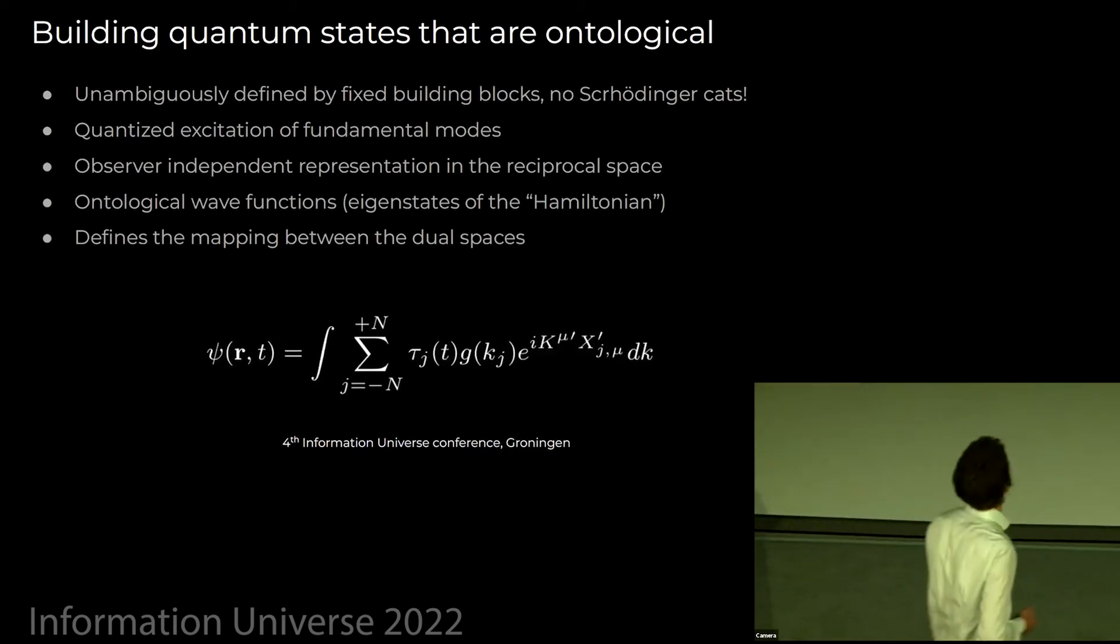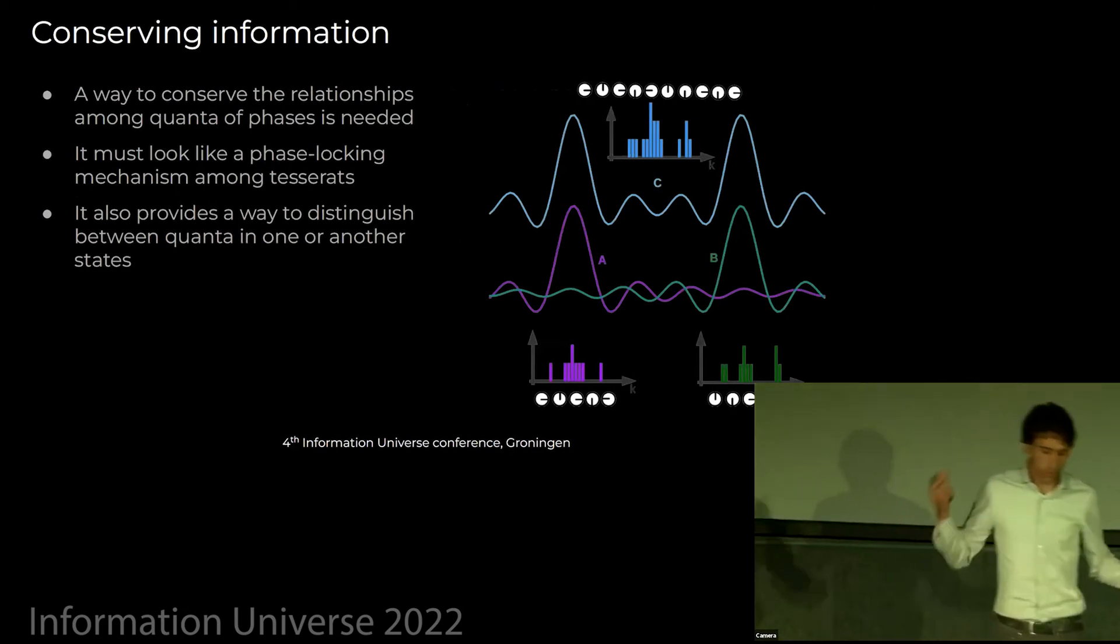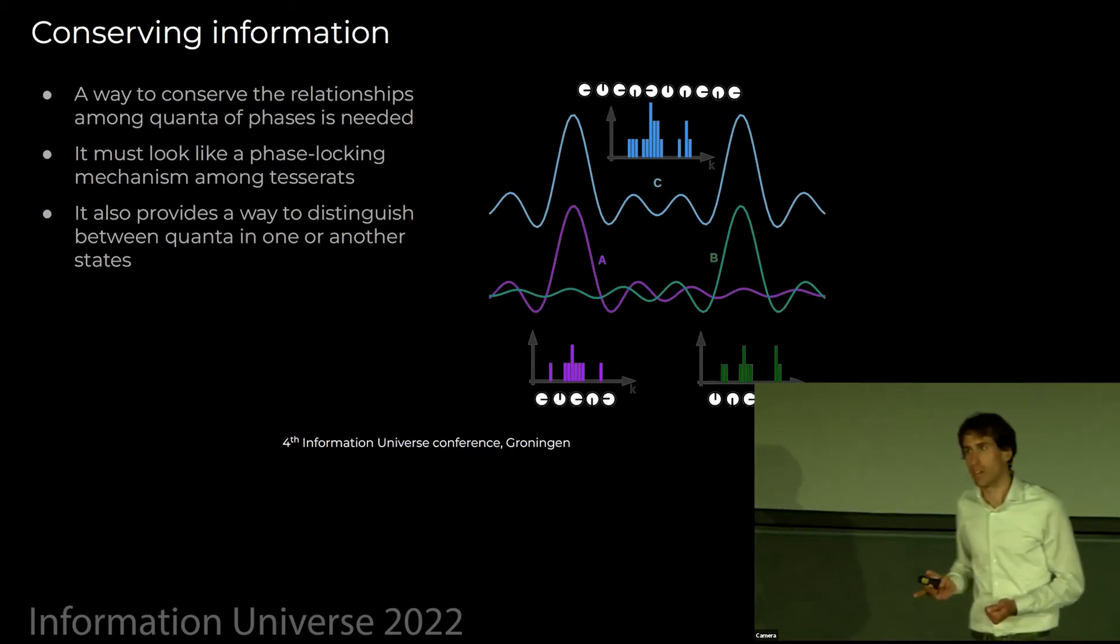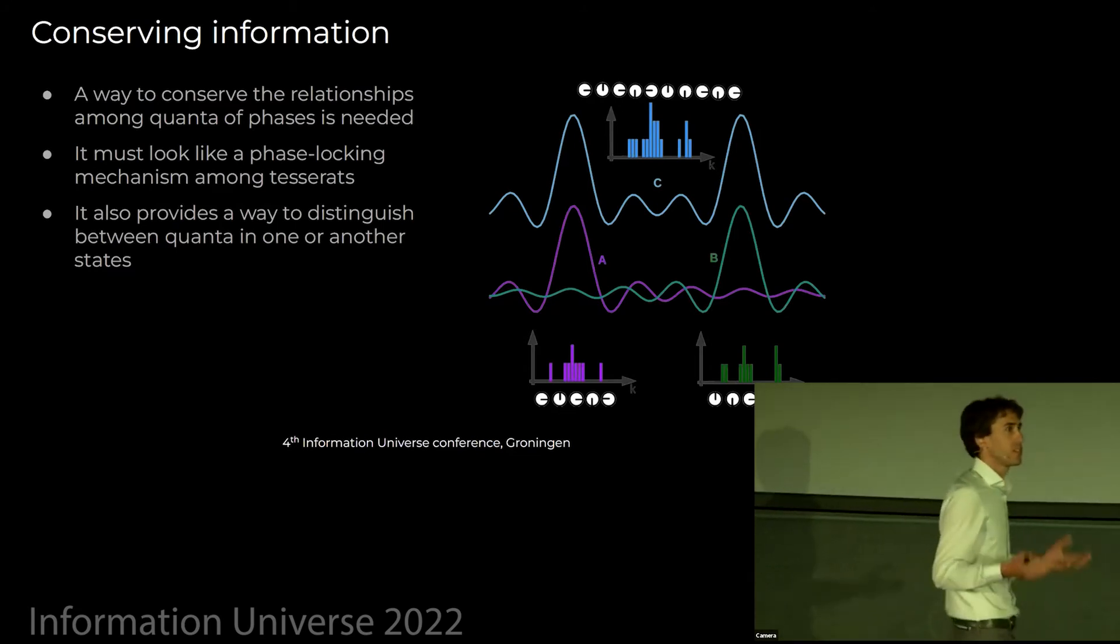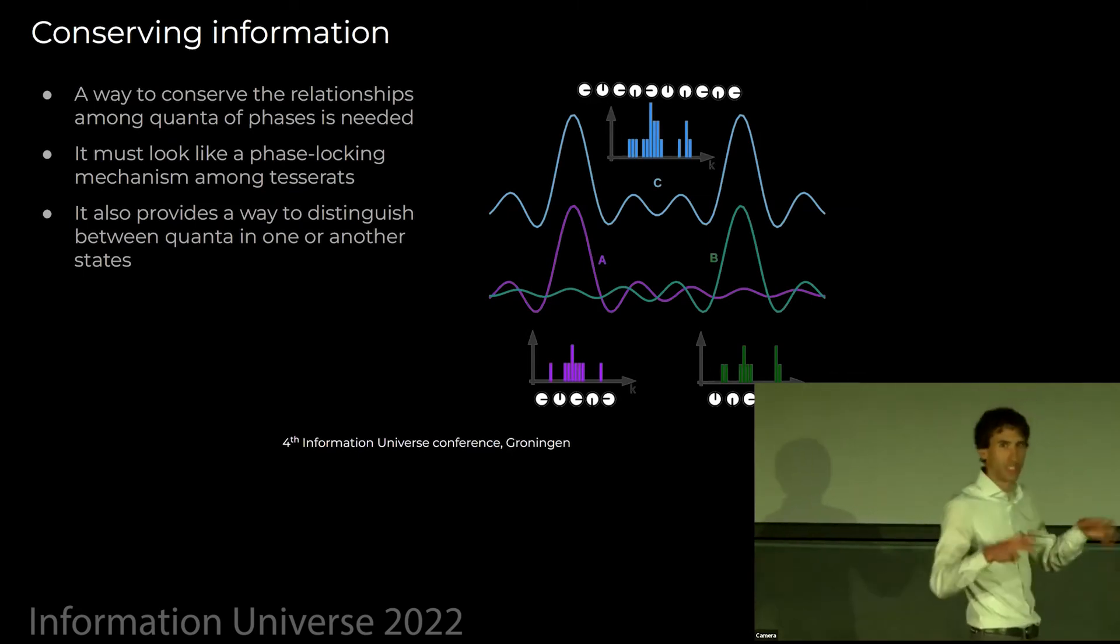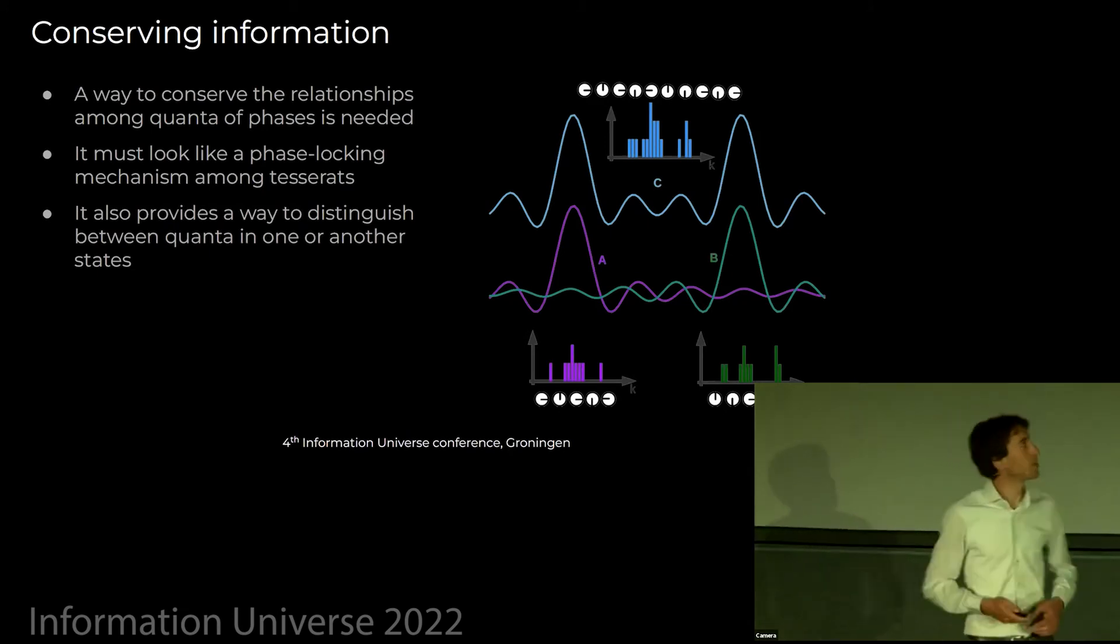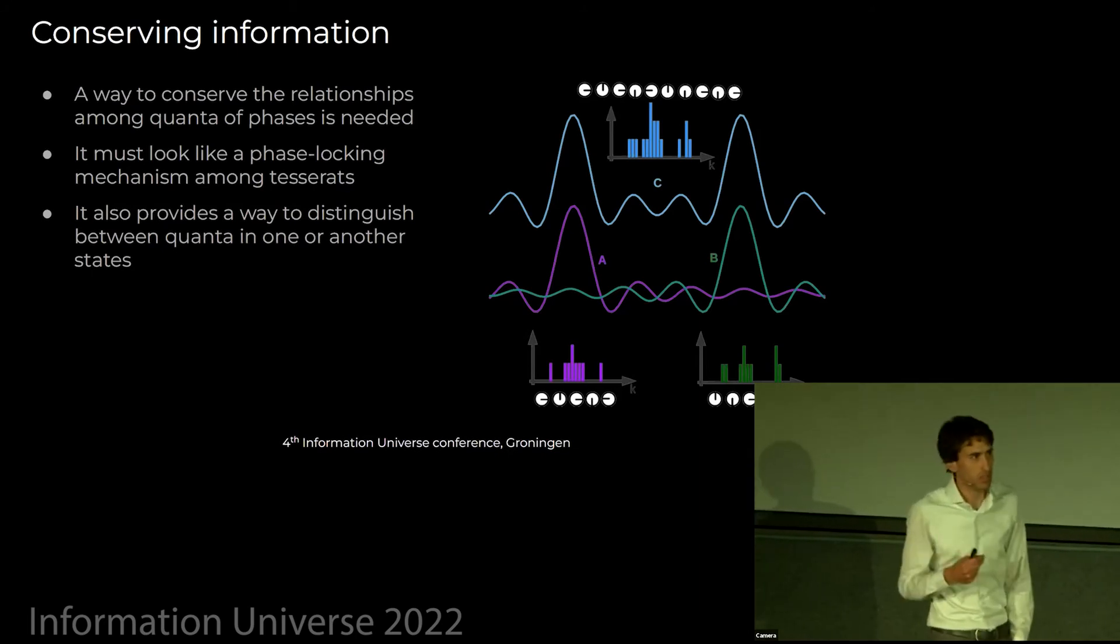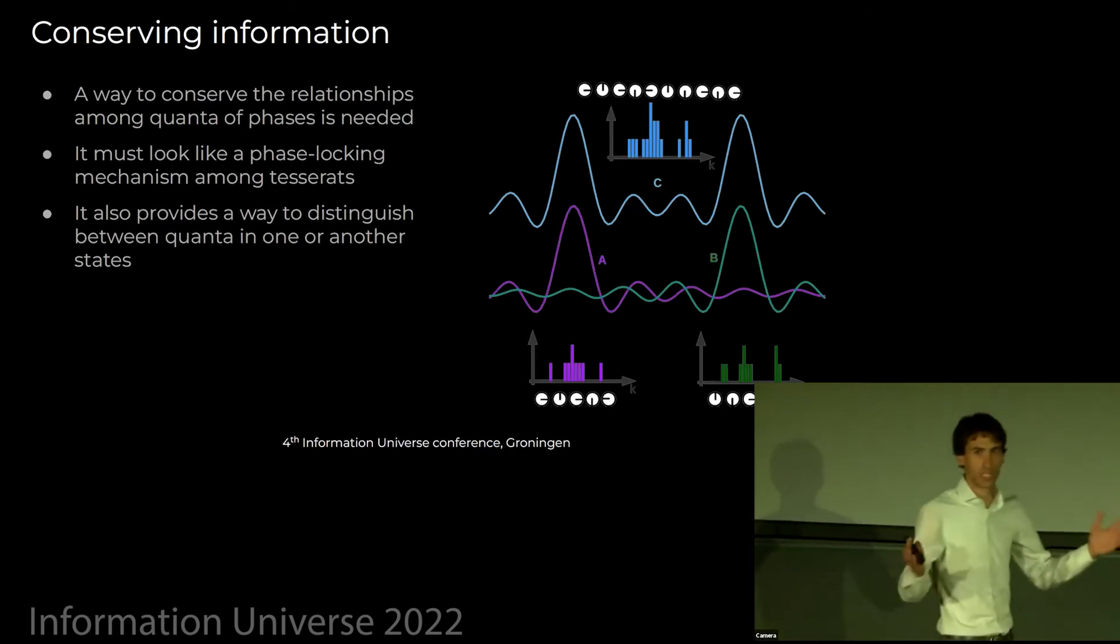It has many properties that I don't have time to go into detail, but now you say, okay, we have states, we have a proposal for which kind of information we can use, but now there should be, what's the law of physics? I still need to conserve this information. I think everybody would agree that within a quantum state, information should be conserved, at least within a quantum state that doesn't interact with anything; otherwise, we would not probably call it even a state. There should be a mechanism in physics, a physical law that is a phase lock mechanism between these quantum phases.